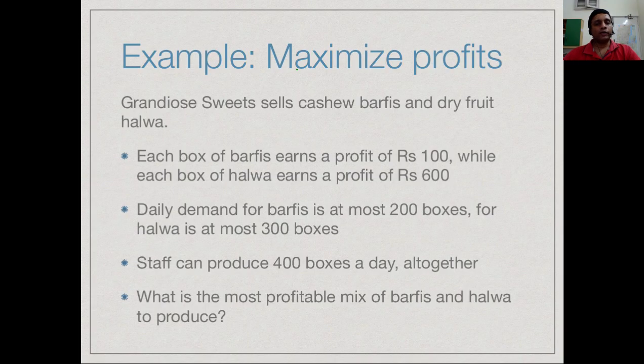The best way to understand linear programming to begin with is to look at an example. Suppose we are running a sweet shop called Grandiose Sweets and we sell two types of sweets: barfis and halwa. Each box of barfis earns a profit of 100 rupees and each box of halwa earns a profit of 600 rupees. Obviously it makes sense to make more halwa than barfis. We also know that on a given day we cannot sell more than 200 barfi boxes and cannot sell more than 300 halwa boxes. Together the staff can only produce 400 boxes. So the question is, given these constraints, what combination of barfis and halwa should we make?